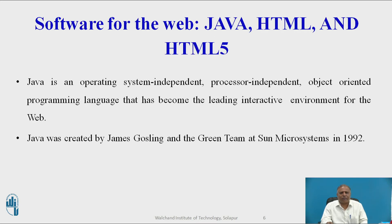Software for the web: Java, HTML, and HTML5. Java is an operating system independent, platform independent, and processor independent, object-oriented programming language that has become the leading interactive programming environment for the web. Java was created by James Gosling and the Green Team at Sun Microsystems in 1992. The Java platform has migrated into cell phones, smartphones, automobiles, music players, game machines, and set-top cable television systems, serving interactive content and peer-review services. Java software is designed to run on any computer or computing device regardless of the specific microprocessor or operating system the device uses. Java developers can create small applet programs that can be embedded in web pages and downloaded to run on a web browser.